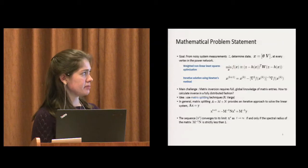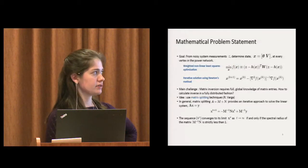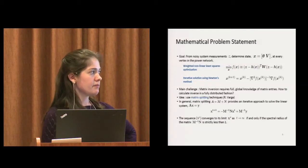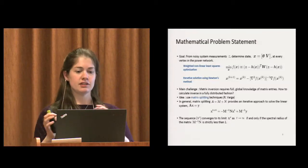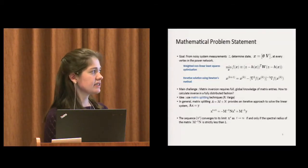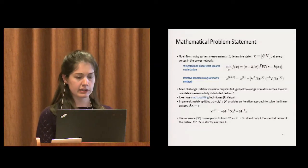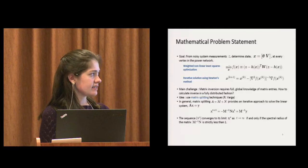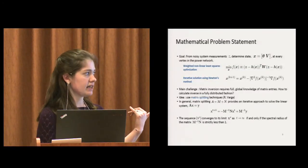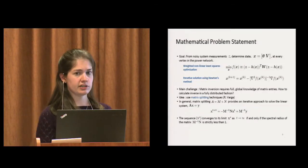We propose using matrix splitting techniques. These were first introduced or developed by Richard Varga in the 60s. Matrix splitting is when you take a matrix A, and you write it as the sum of two matrices M and N. This gives you an iterative scheme for solving a linear system Ax equals y. This iterative scheme will converge to the solution you would get by directly solving, as long as the spectral radius of M inverse N is strictly less than 1.